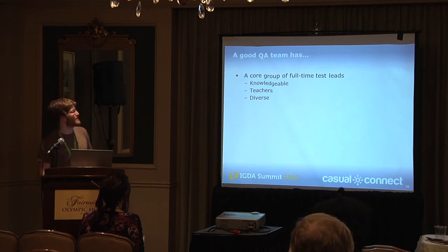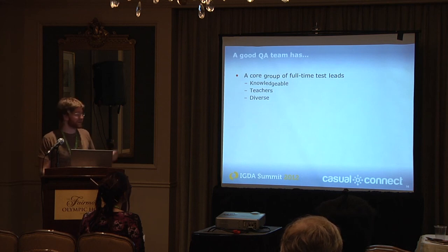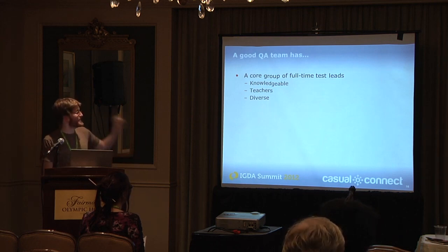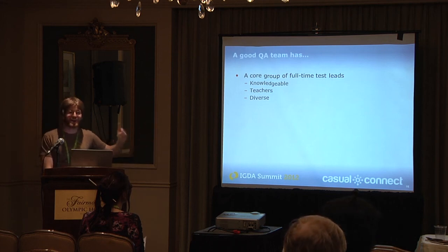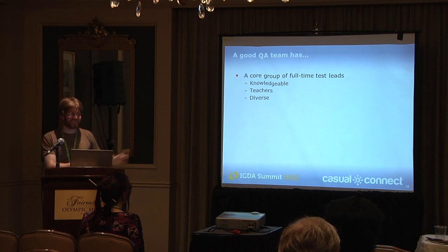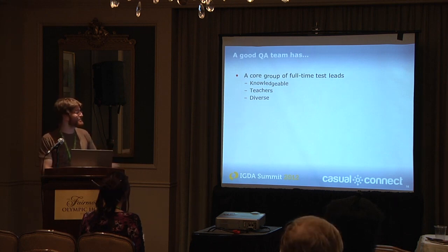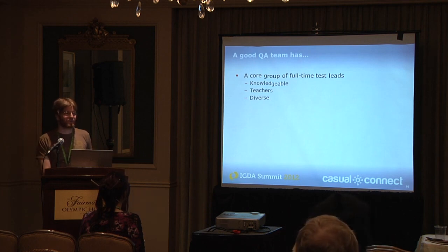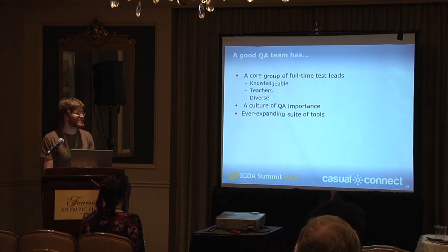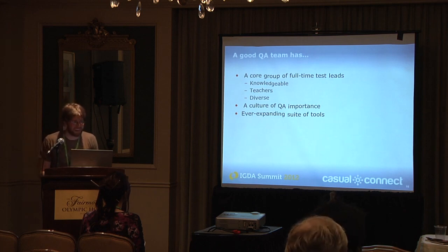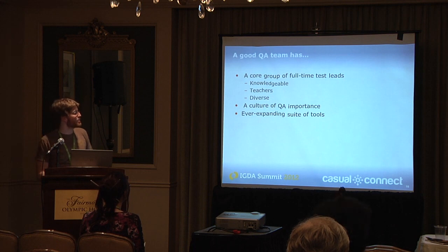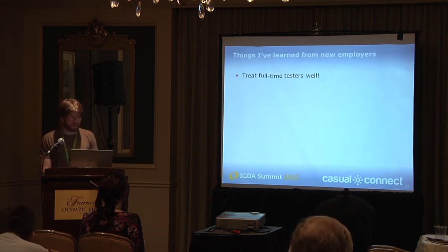Here are some basics about building a good QA team, drawn from working with different companies. First, a core group of full-time test leads who are knowledgeable and can act as teachers — these are the people training contract testers, so treat them well even if you pay contractors minimum wage. Second, a culture of QA importance: make inroads with producers and instill in the company that QA matters. Third, ever-improving tools — tools are important.